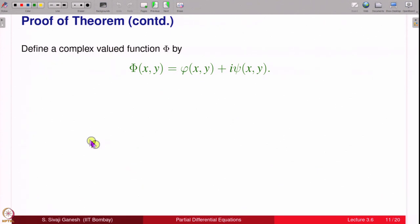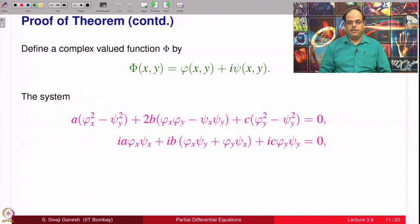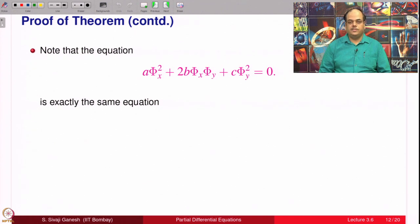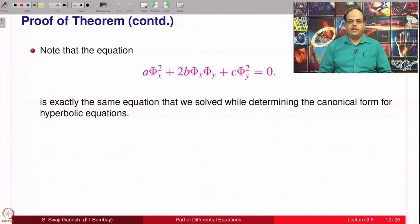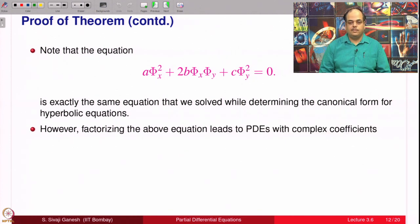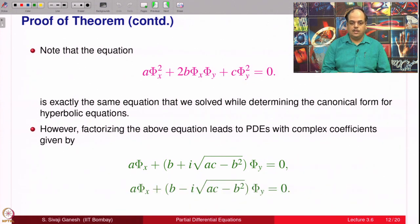Define a complex valued function capital Φ by φ(x,y) + i·ψ(x,y). This system that we want to solve for φ and ψ is equivalent to this one single equation now: a·Φ_x² + 2b·Φ_x·Φ_y + c·Φ_y² = 0. This equation we have seen earlier; this is the same equation that we solved while determining canonical form for hyperbolic equations. Of course, the difference was there that we could factorize as real equations, factors were real, but here it will not happen. It leads to PDEs with complex coefficients given by this equation and this equation. In the case of hyperbolic equations there was no i first of all, and inside was b² - ac. These are the two equations we have.